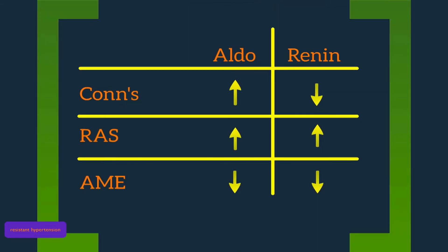A very common board question is how to define the difference between Conn's syndrome, renal arteriostenosis, and another condition called apparent mineralocorticoid excess, or Liddle's syndrome. In this pictorial here, I'll try to illustrate how to tease those diseases out.